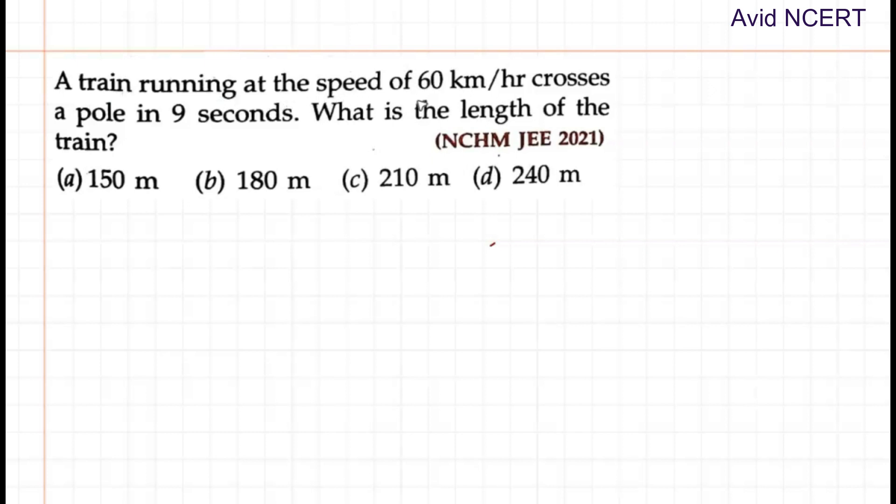A train running at the speed of 60 km per hour crosses a pole in 9 seconds. What is the length of the train?